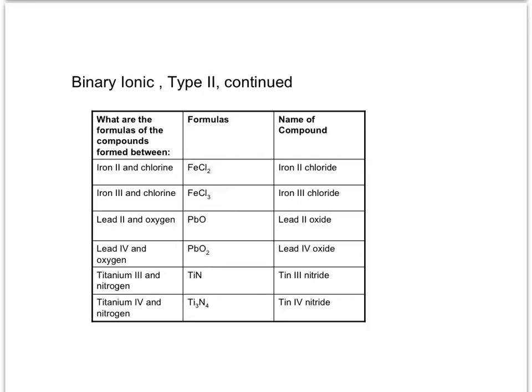What is the formula for the compound formed between lead(II) and oxygen? Lead is +2 and oxygen is −2, so it's a one-to-one relationship. The name requires a Roman numeral: lead(II) oxide. It's still binary, so you name the metal — lead(II) — start the anion name — ox — stop — and add -IDE.